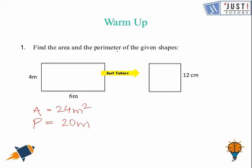Now let's come to the square. In square, as we know that area is calculated by multiplying side with side, it gives us 144 centimeters squared. And perimeter comes out to be 48 centimeters when we add up all the sides.